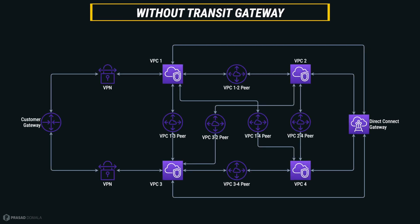Without Transit Gateway, if you want to connect VPCs, you need to create peering connections between all the VPCs, and this peering connection is not transitive, meaning you cannot access peered VPCs through another peering connection. We should create a VPC peering connection with every other VPC in your network. This applies to on-prem networks as well, so we need to attach a VPN to each individual VPC. With rapidly growing infrastructure requirements with hundreds or even thousands of VPCs, this setup is obviously time-consuming and hard to manage.